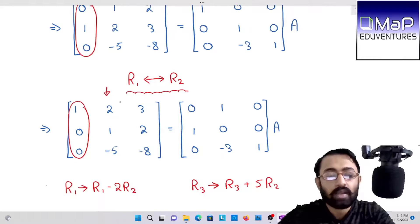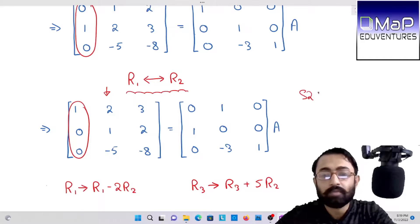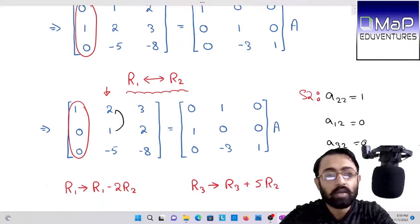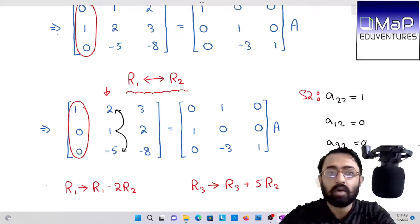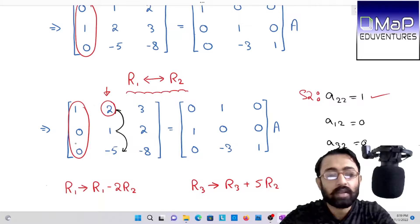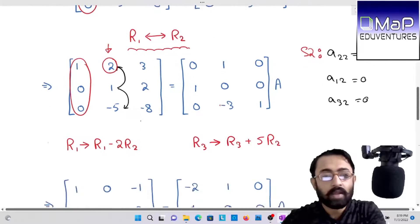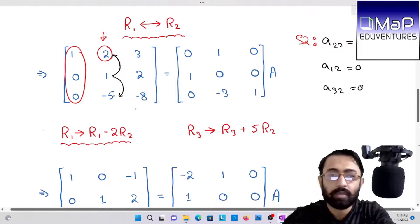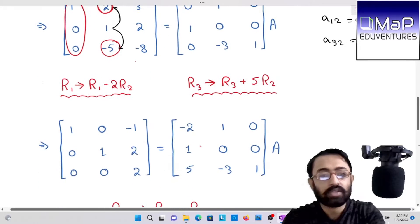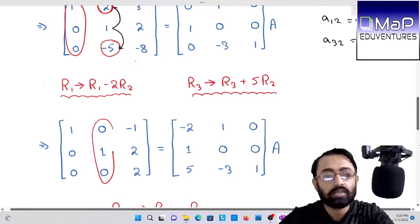We will come to the second column. Second column step, which was our step two. Step two: we have to first of all try to make A22 one, and with its help A12 zero and A32 zero. That means one in the middle position and above and below zero. Already one is there, so our step one is clear. Now the two above needs to be zero.